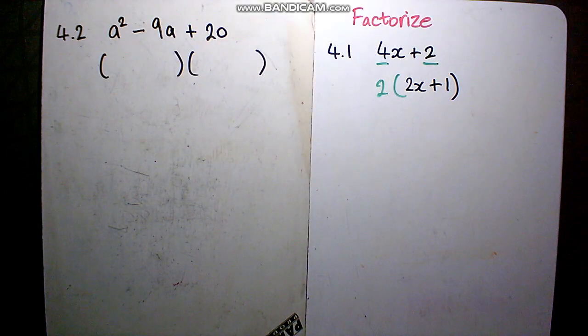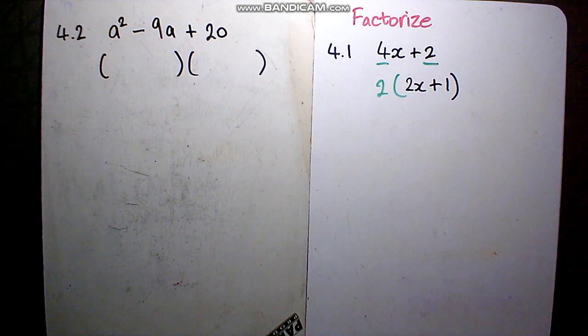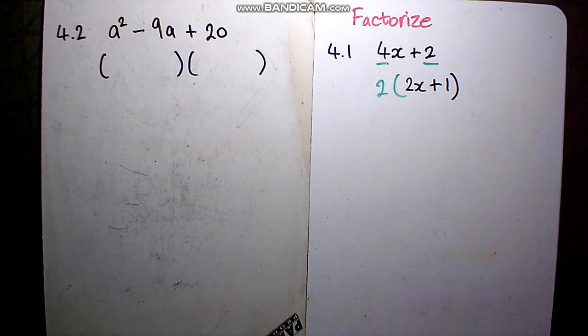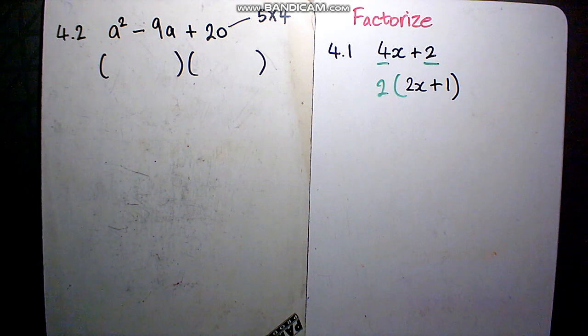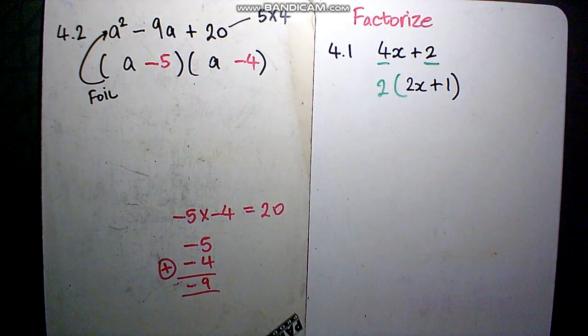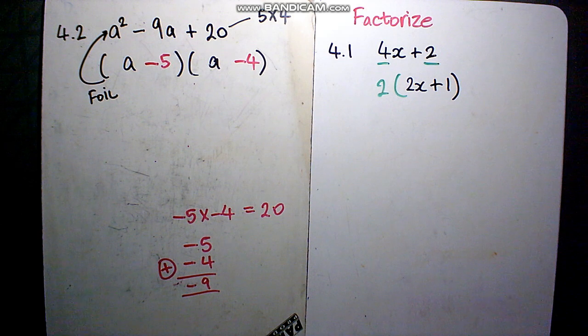Alright, next we have a trinomial, 4.2. We must look for factors of 20. When multiplied it must give us 20. When added it must give us minus 9. Think of 2 factors of 20 that can fulfill both those ideas. How about 5 times 4? 5 times 4 is 20. But if I have minus 5 minus 4, it can also give me minus 9. Alright, then we are going to be left with A in both brackets. Then foil it all out just to confirm if it gives you that answer. Always foil to double check.